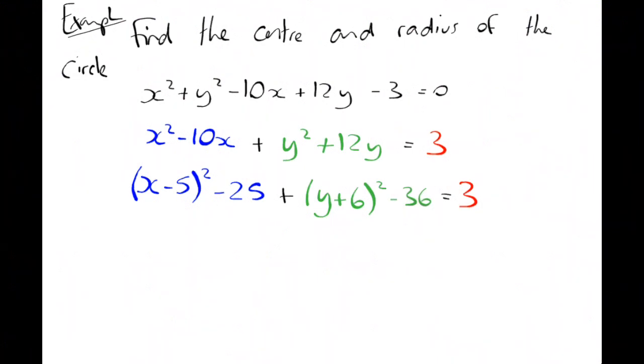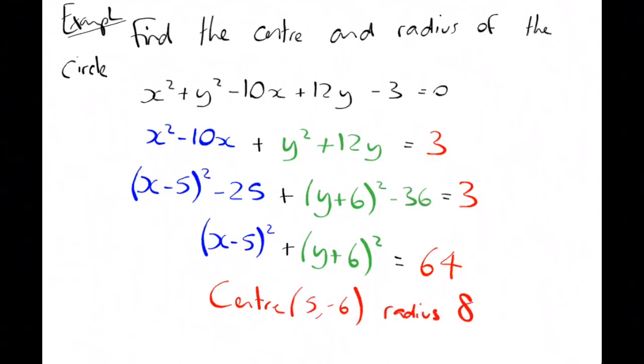I'm almost there. I need to put it into circle form. So I'm going to move the 25 and move the 36 across. X minus 5 all squared plus y plus 6 all squared equals 64. Find the centre and the radius of this. Well, the centre is just going to be 5 minus 6. And the radius is going to be 8.